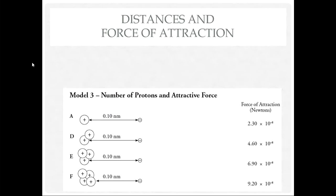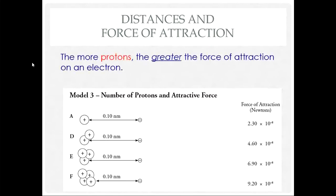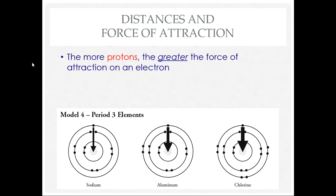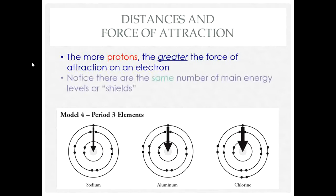In models three and four, you looked at what happens as an atom increases the number of protons. The more protons, the greater the force of attraction on an electron. As you go left to right across the periodic table, you're gaining more protons, making the positive charge stronger, and therefore the force of attraction on the valence electrons also gets stronger.